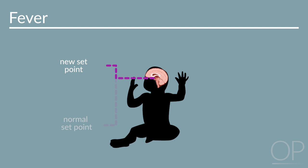This is why patients with new fevers often feel cold and experience rigors. Their current body temperature, although elevated above true normal, lies below the newly elevated hypothalamic set point and leads to the subjective feeling of cold.